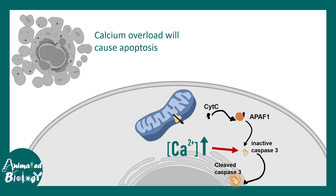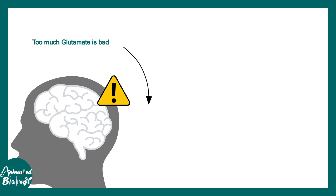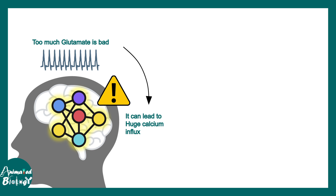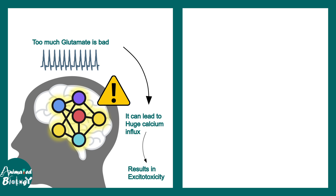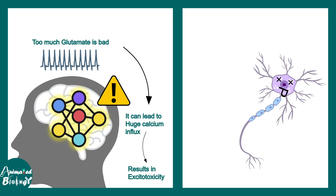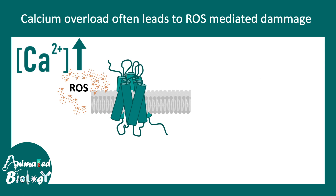This kind of calcium overload is very important in the context of highly electrically and metabolically active cells like neurons. When there is too much glutamate, there is too much calcium influx through the glutamate receptors, leading to a problem known as excitotoxicity. Too much excitability in the brain can lead to seizures and death of neurons, which is why it is important to keep calcium levels in check.